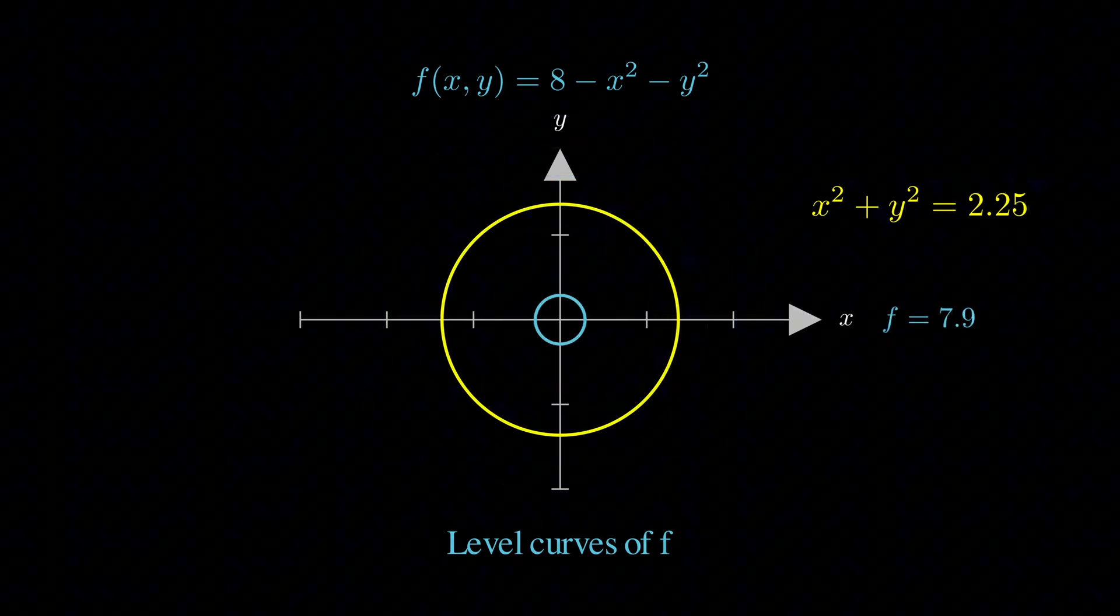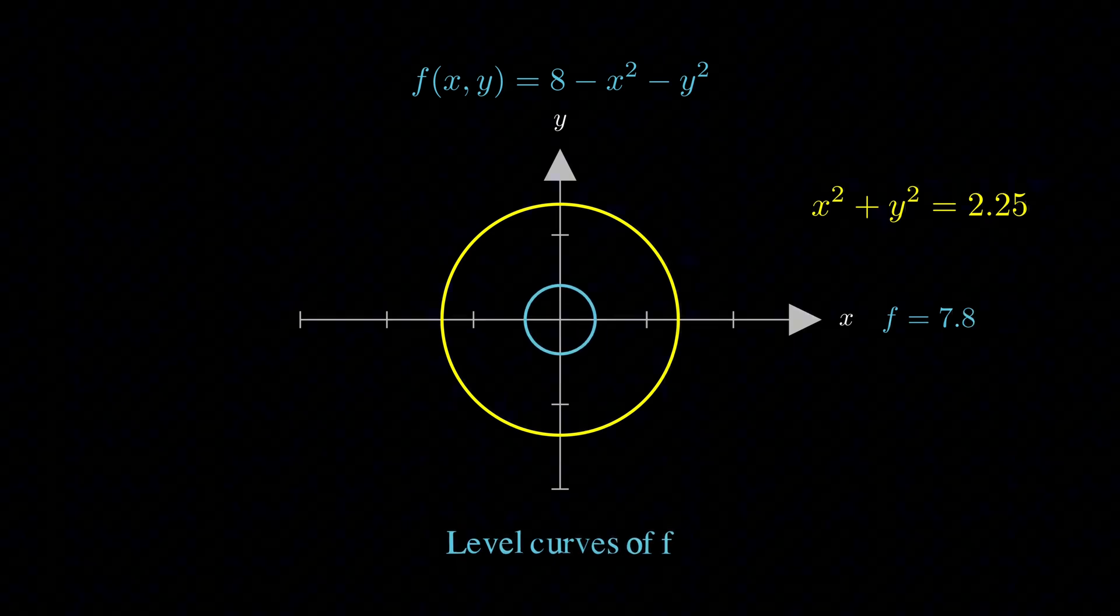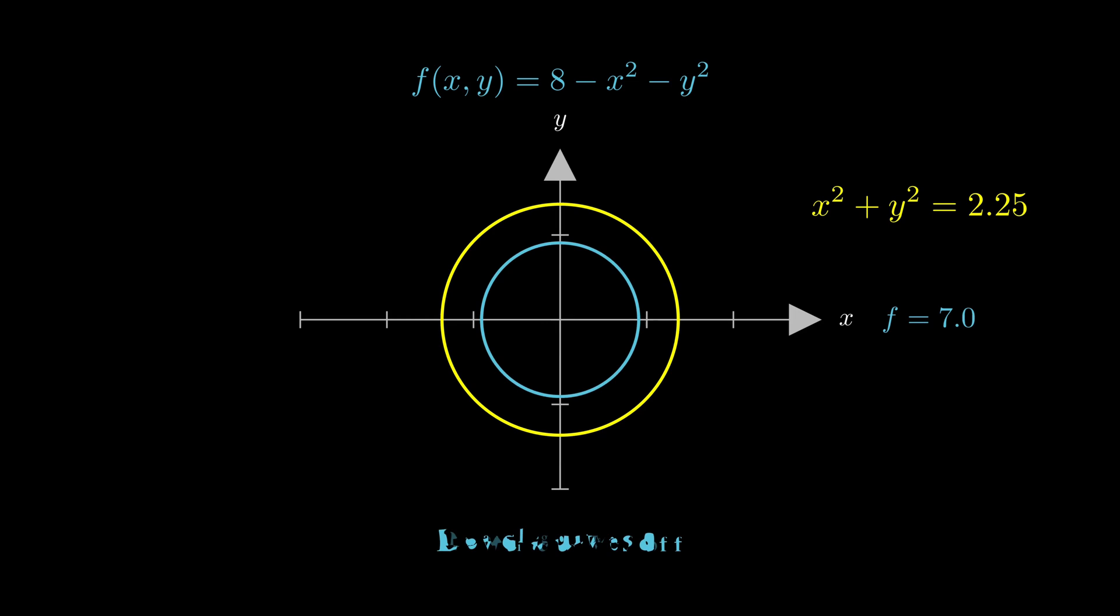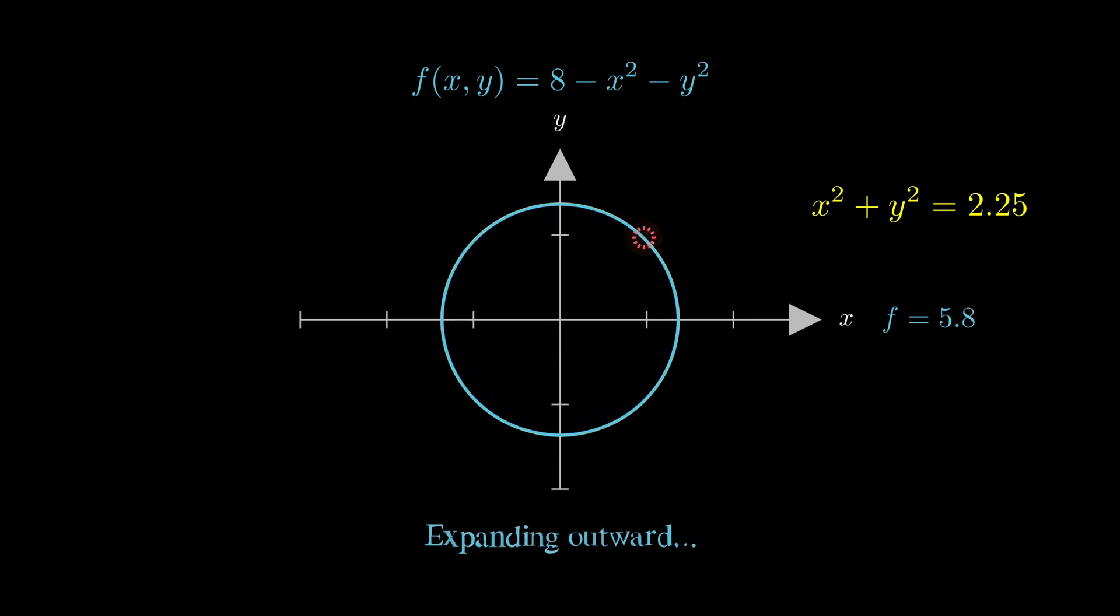Now watch as I animate a level curve expanding from the center. It starts with a high value near the peak and the value decreases as the circle grows. Keep watching. There. Right when the expanding level curve becomes tangent to our yellow constraint circle, that's our optimal point.